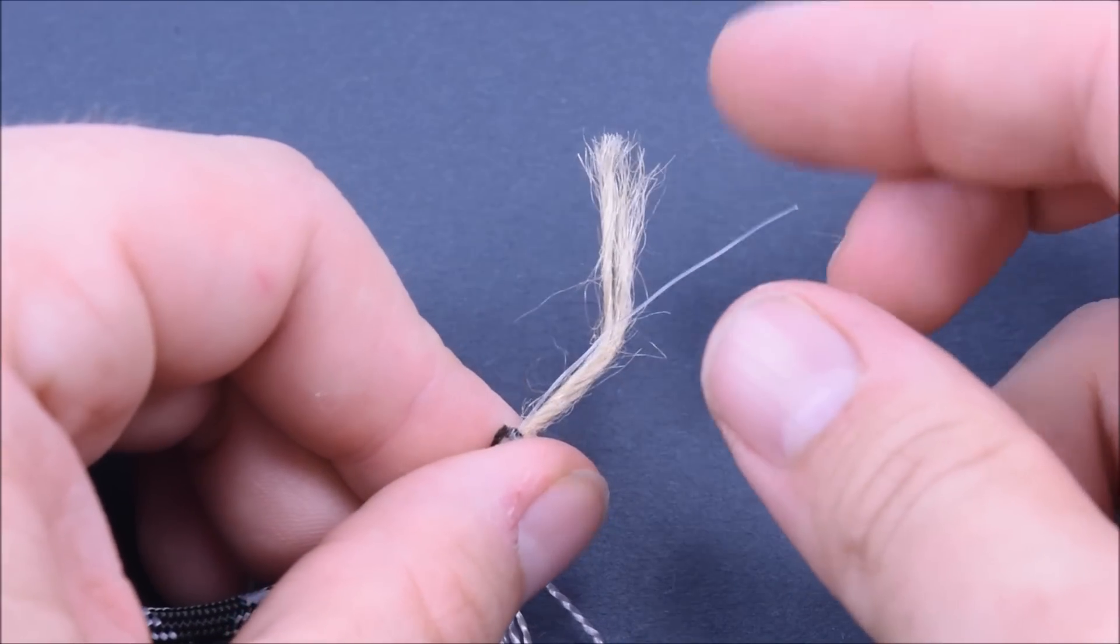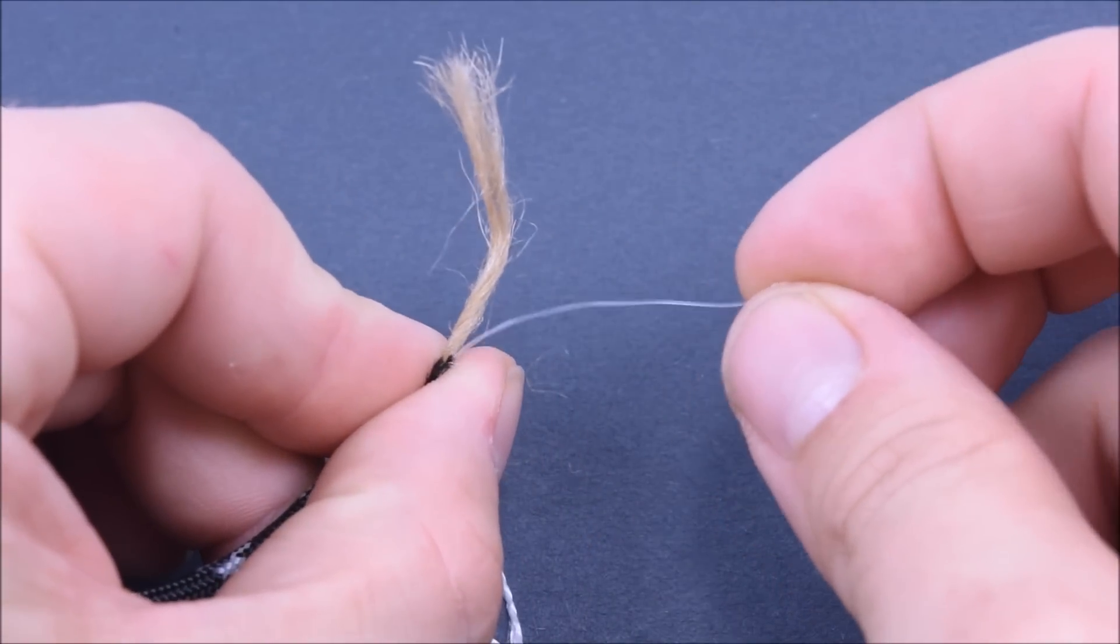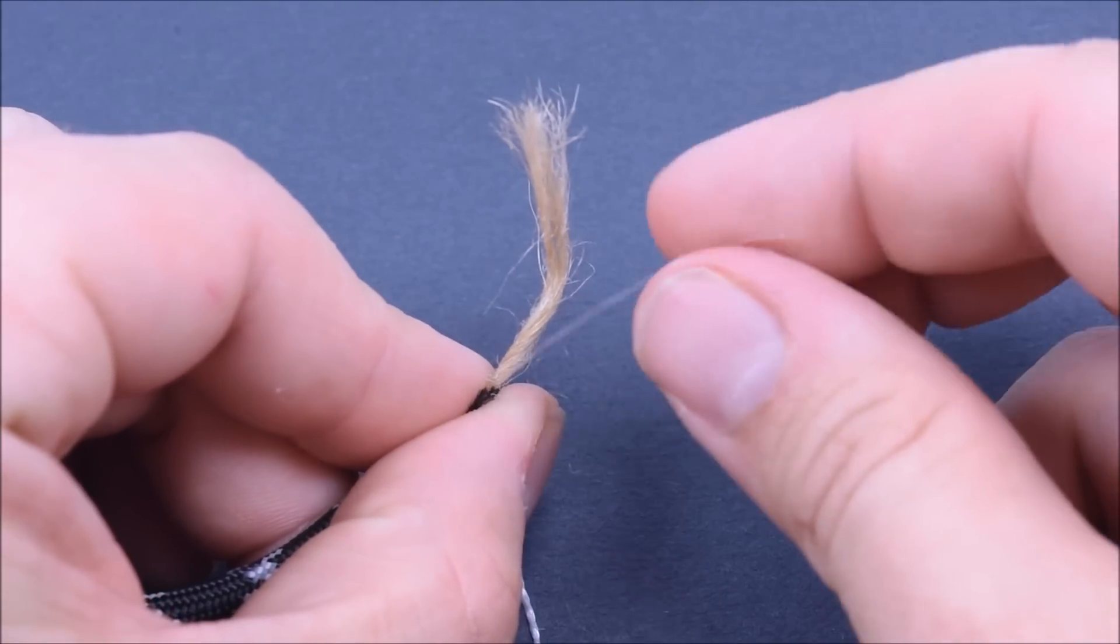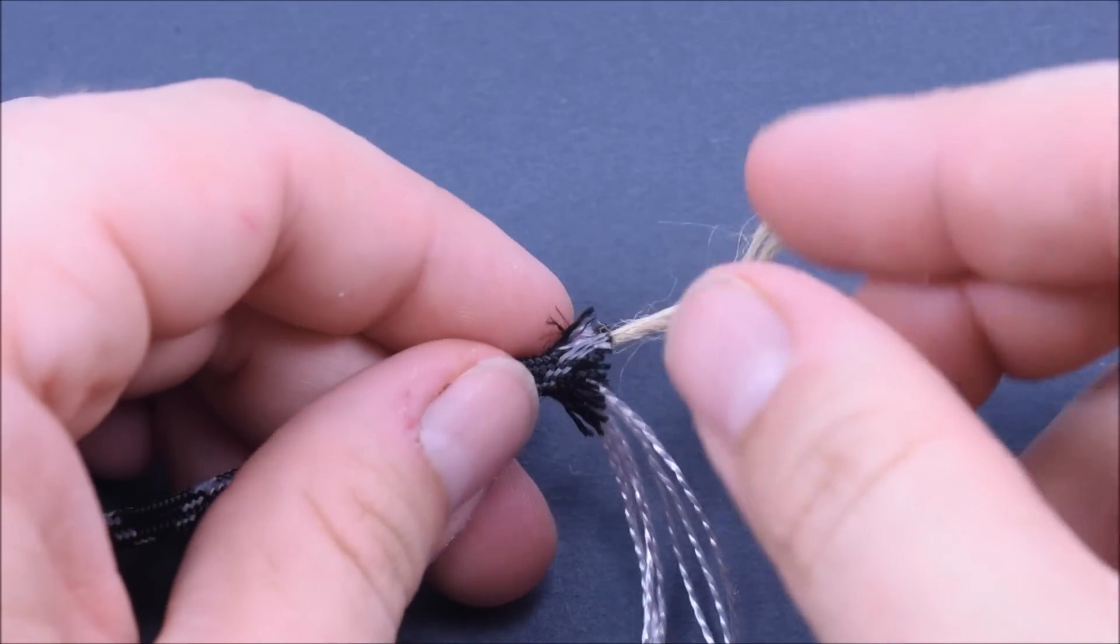Okay, so the other part of this cord, you've got your fishing line. This is a 15 pound fishing line, and that's throughout the whole cord there.